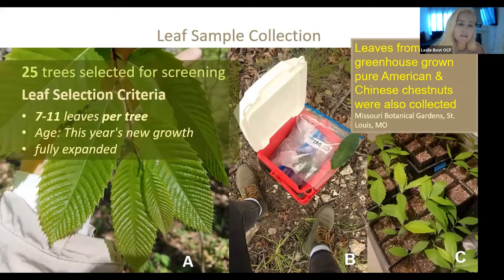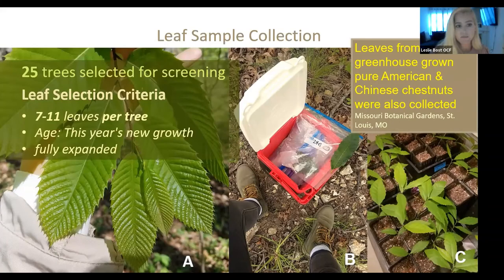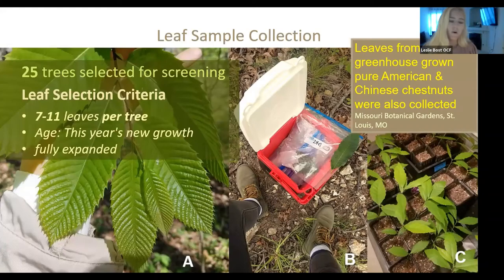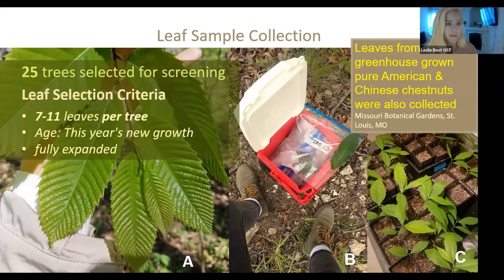While that's going on in the lab, in the spring we selected 25 trees on our research plots that we wanted to screen for resistance. A great thing about the detached leaf assay is that the age of the tree doesn't matter - I could test a seedling or a 50-year-old tree. What is important is the selection of the leaf: it has to be from this year's new growth, but it cannot be one of the newest leaves. The leaf needs to be fully expanded, with no redness on the tip and not too soft - about the fourth or fifth leaf from the tip.